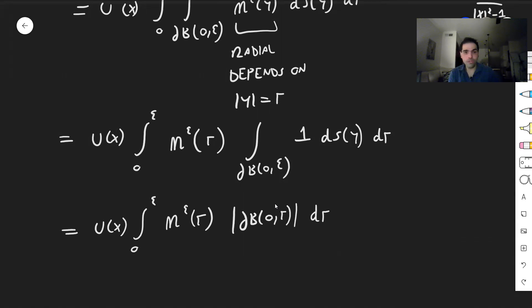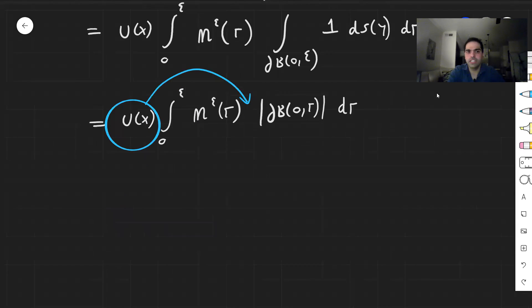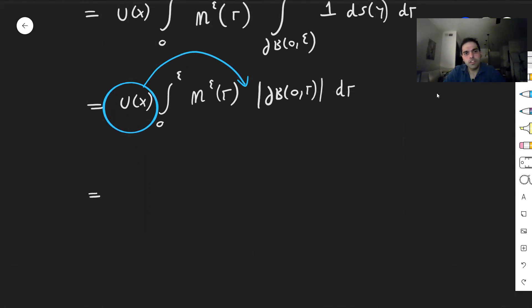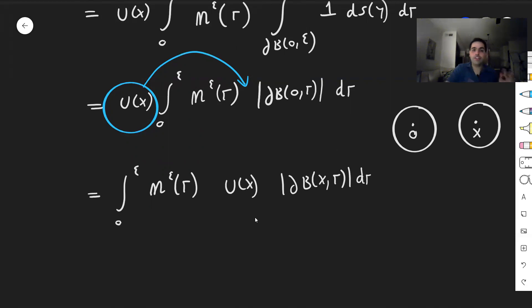And then we would like to do some kind of neat tricks. So what we would like to do now, let's pull this u inside. And you'll see why we need that. So this becomes integral from 0 to epsilon, eta epsilon of r, u of x. Now here's the thing, well the surface area of the sphere centered at 0 is the same as the surface area of the sphere centered at x. So this becomes surface area of B(x, r), dr.